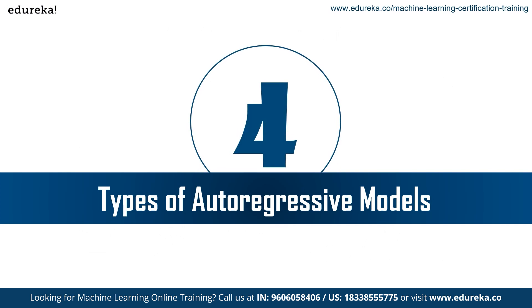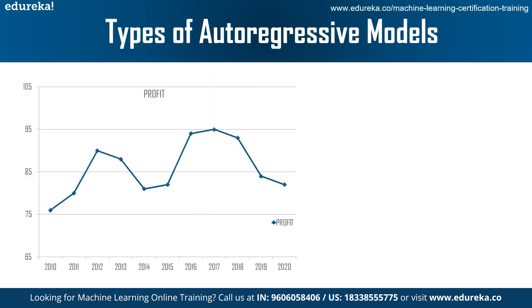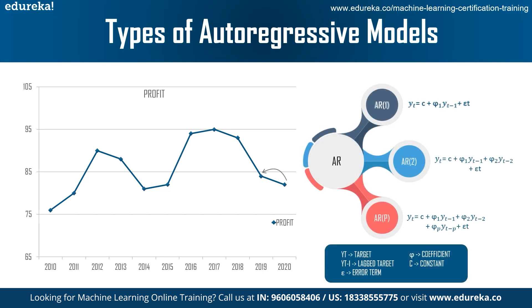Now let's look at the various kinds of auto regressive models — specifically the number of previous values to take into account. Say we have profit data up to 2020 and want to forecast 2021. AR(1) takes only one previous year's data point: to determine Yt, we take Y(t-1) along with its coefficient phi, constant C, and error term eta. AR(2) takes both t-1 and t-2 to predict Yt. Note that there is always one constant and one error term, but the number of coefficients depends on the type of auto regressive model chosen.